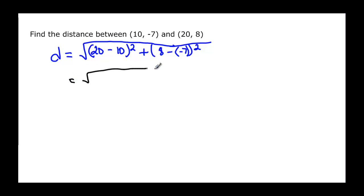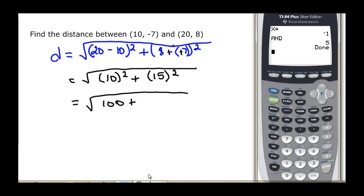Equal to the square root of 20 minus 10 will be 10 that I have to square, and 8 plus 7 will be 15 which I'm going to have to square. And then this gives me the square root of 100 plus, and I think I know what that is but I want to double check that I'm doing it right. So 15 carat 2 is 225.